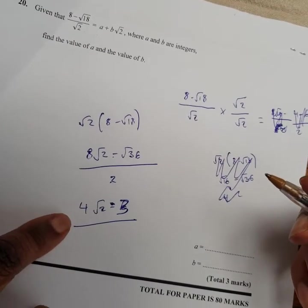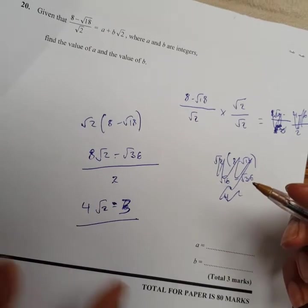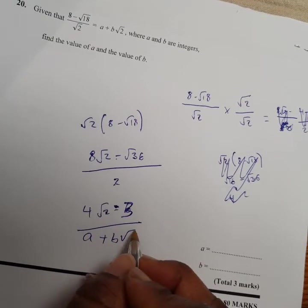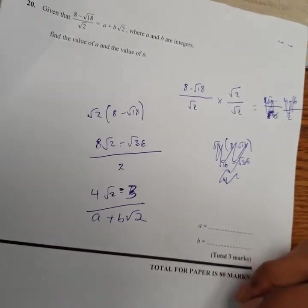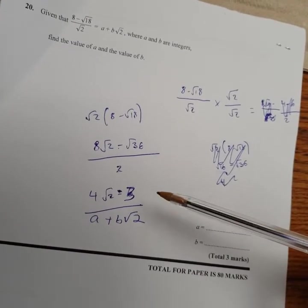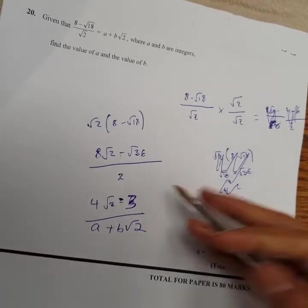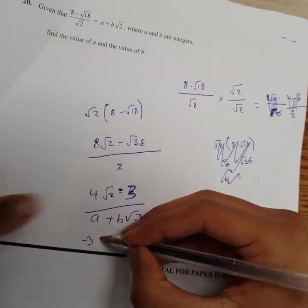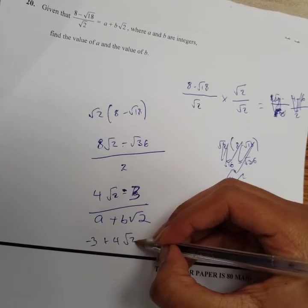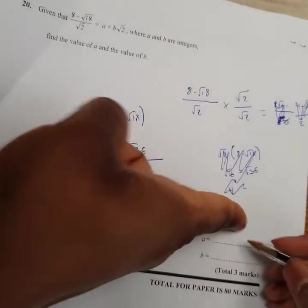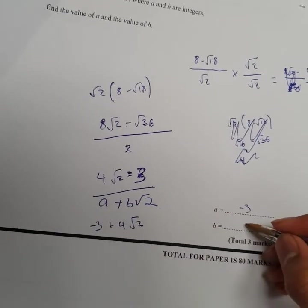But they want you to write it in this form, A plus B root 2. So how would you rearrange this to be like A plus B root 2? Would this be 4 plus 3 root 2? No, because there's a minus there. So you write minus 3 there. Minus 3 plus your 4 root 2. Or root 2. So what do you think A is? A is minus 3. Do you want to write that there? And B is 4.